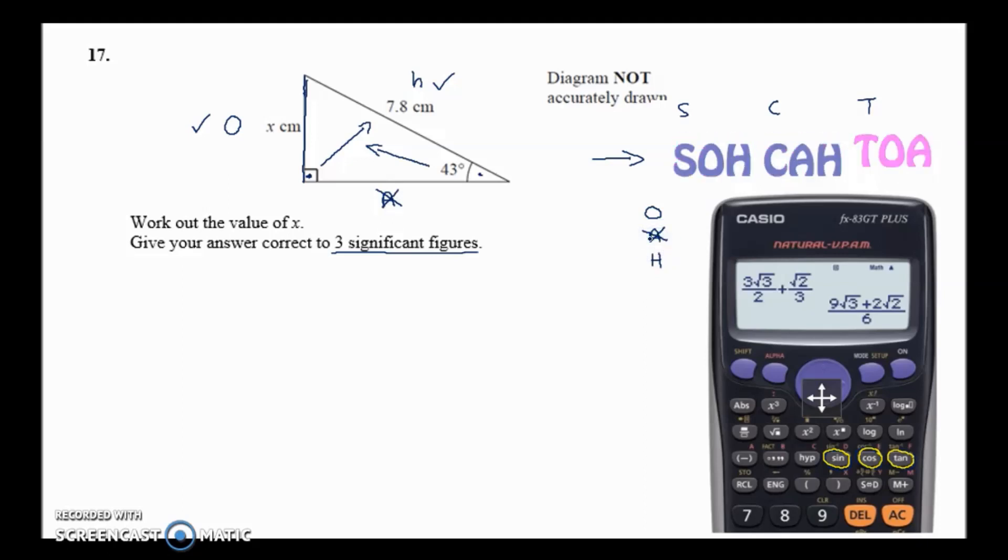Looking at SOH CAH TOA, there's only one part that has O and H in it and that is the SOH part. SOH CAH TOA comes in sets of three: S-O-H, C-A-H, and T-O-A. These are how you set out your formulas.